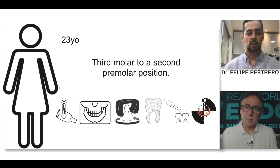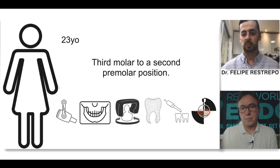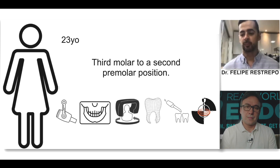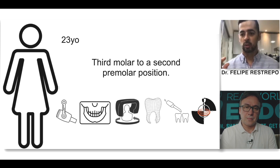What I'm doing right now is using dynamic navigation to do auto-transplantation in a planned, more predictable way. What this gives us is very short extra-alveolar time — that is what we want — just to reduce the extra-oral time of a donor tooth to just a matter of seconds. That's the main goal.